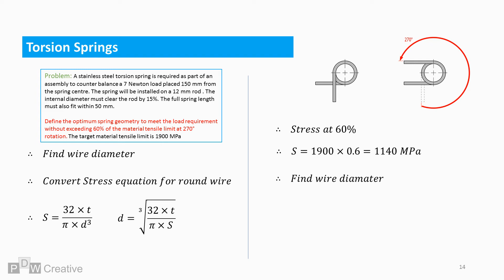Let's input this into the equation. We input the torque value needed to counterbalance the load and maximum acceptable stress. And this gives us a wire diameter of 2.1 mm.